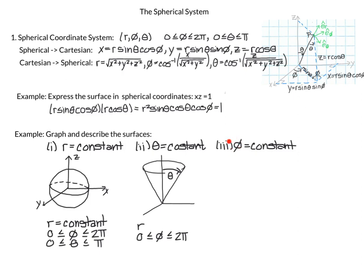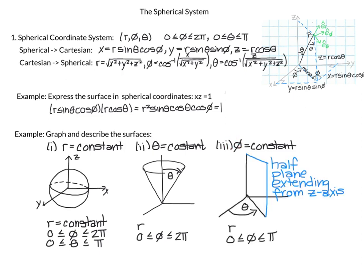Third, phi equals a constant: we start with a line at angle phi from the x-axis, and since r can vary the line extends infinitely. Because this happens for all values of theta from the z-axis down, we get a half-plane extending from the z-axis.